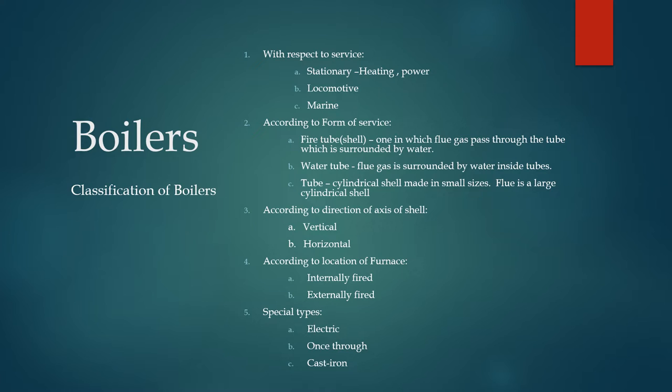In water tube boilers, water is inside the tube and flue gas surrounds it. The tube is a small cylindrical shell, whereas the flue is a large cylindrical shell — that is the difference between a tube and a flue. The third category is according to the direction of the axis of the shell — whether it is vertically mounted or horizontal. The fourth is according to the location of the furnace — whether it is internally fired or externally fired.